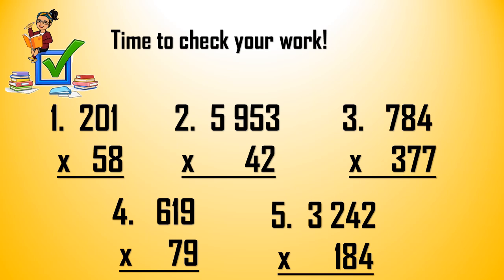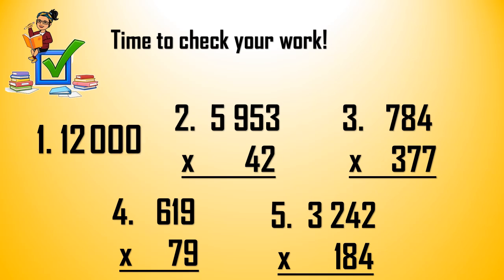Number 1: 201 times 58 will become 200 times 60. And 200 times 60 is? 2 times 6 is 12, and there are 3 zeros. So the answer is 12,000. If your answer is 12,000, check for number 1.